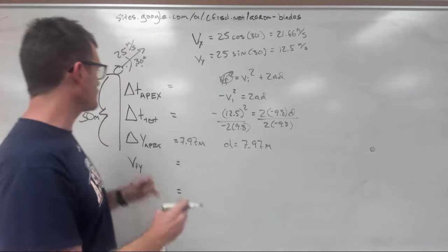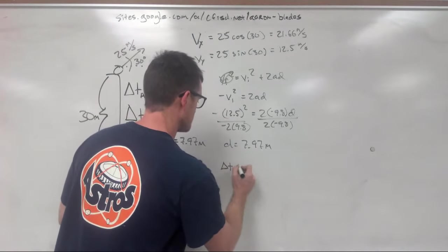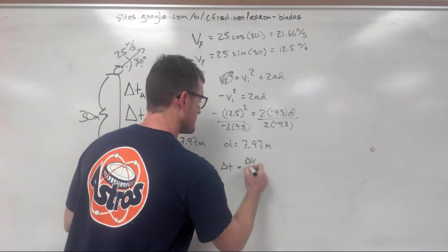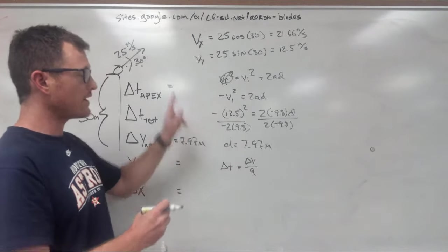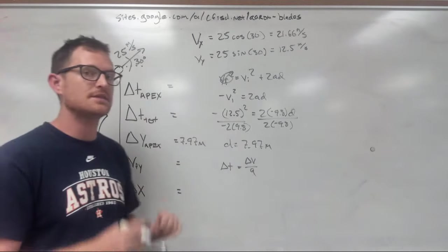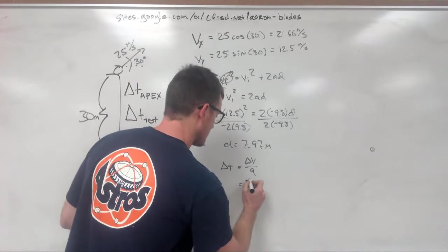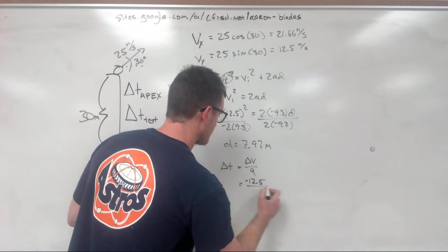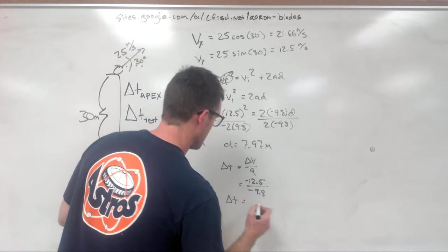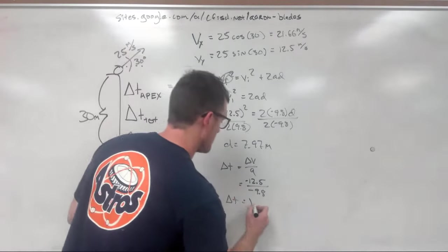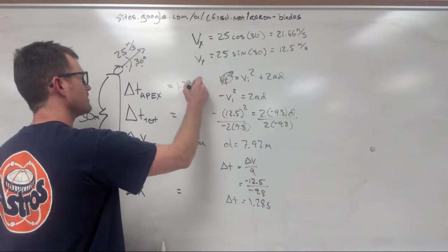Next, what we're going to do is try to figure out this time to the apex. This one's pretty easy. We just use delta T is equal to delta V over A. And just like we talked about before, our final velocity in the Y direction when the ball hits its apex is going to be zero. So our delta V is negative 12.5 divided by our acceleration, negative 9.8, which gives us a delta T to the apex of 1.28 seconds.